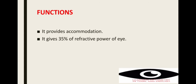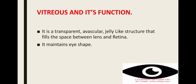Functions of the lens: it provides accommodation and gives 35% of the refractive power of the eye. When light rays enter the eye, the lens changes its shape through accommodation to focus light on the retina. Next is the vitreous — a transparent, avascular, jelly-like structure that fills the space between the lens and the retina, maintaining the eye shape.